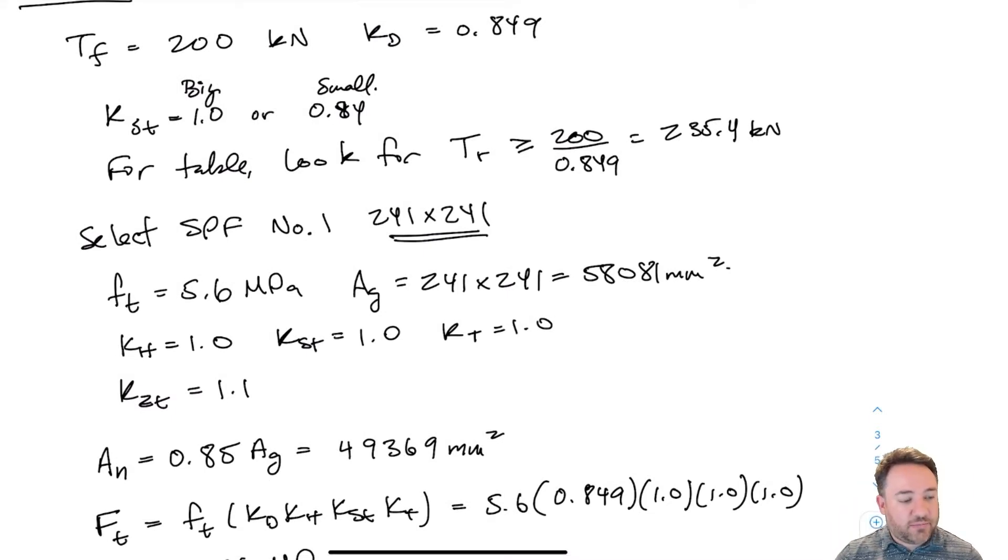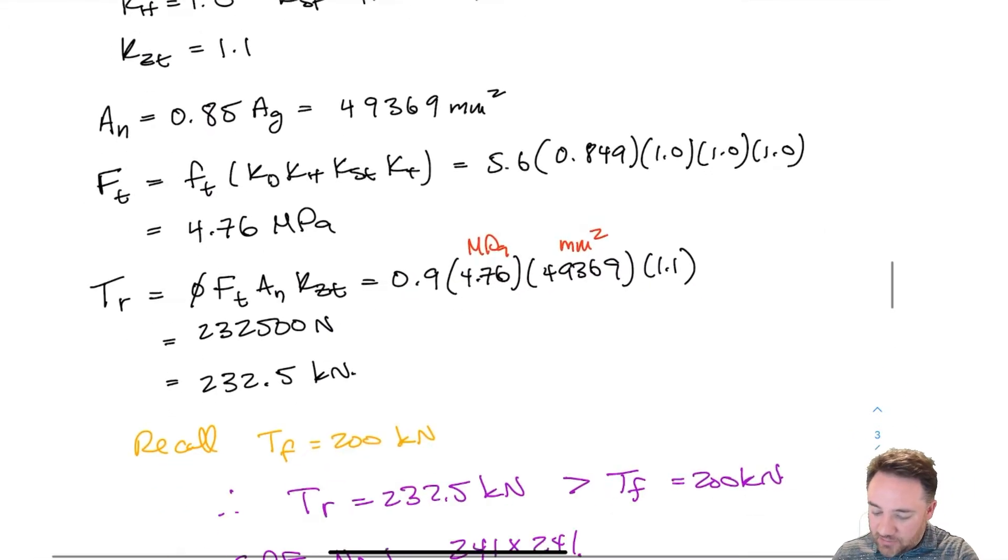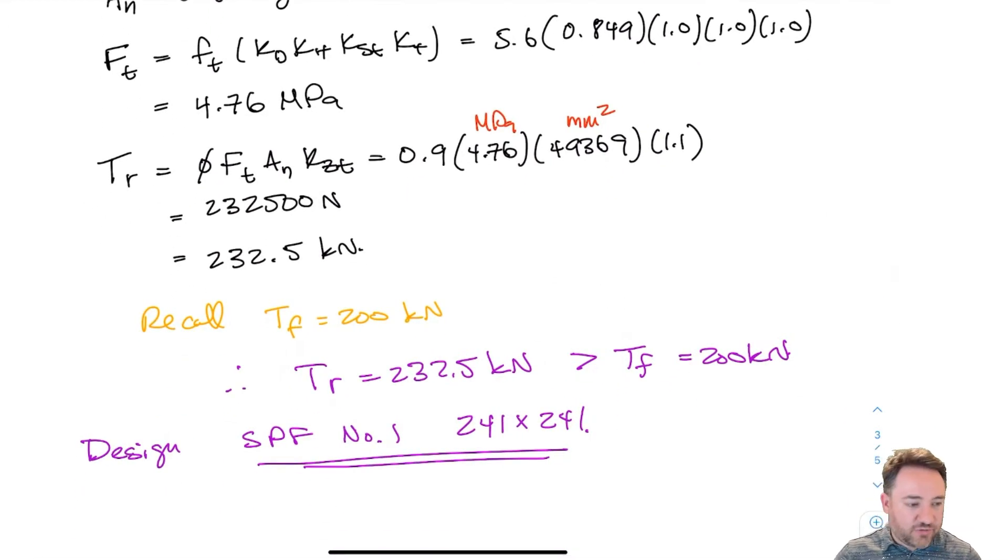One thing that I didn't mention before, because we see here that KZT the size factor is not equal to one, that size factor is taken into account in the table resistances. KZT is included, so those member resistances include consideration of KZ. We came up with a tension design for lumber, and it was a 241 by 241 member, which was basically the biggest one.